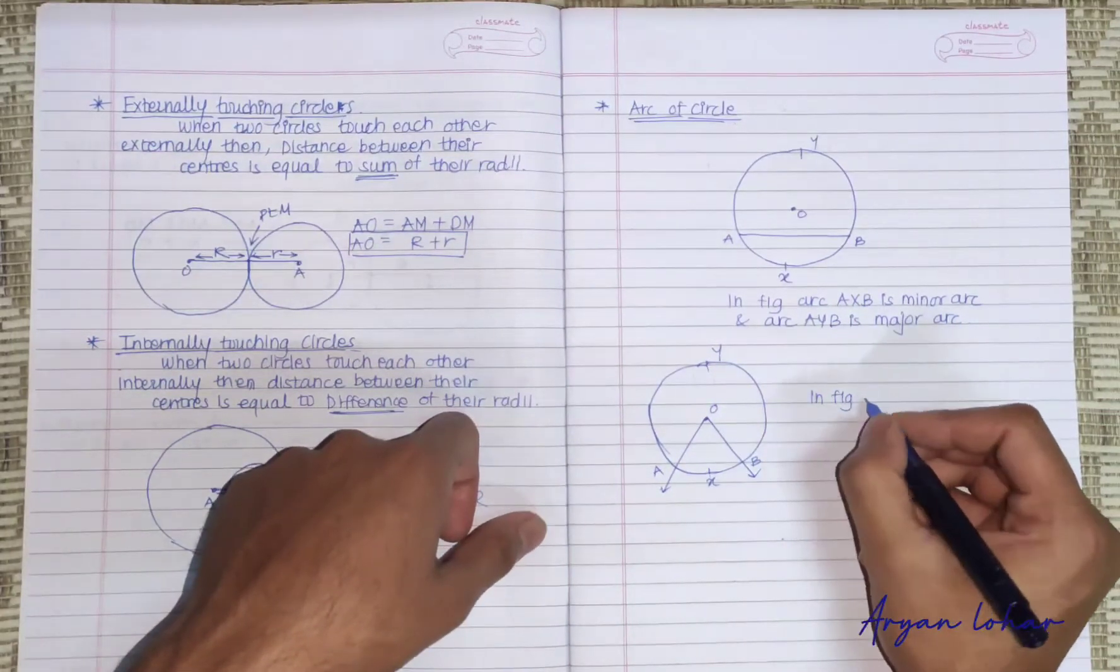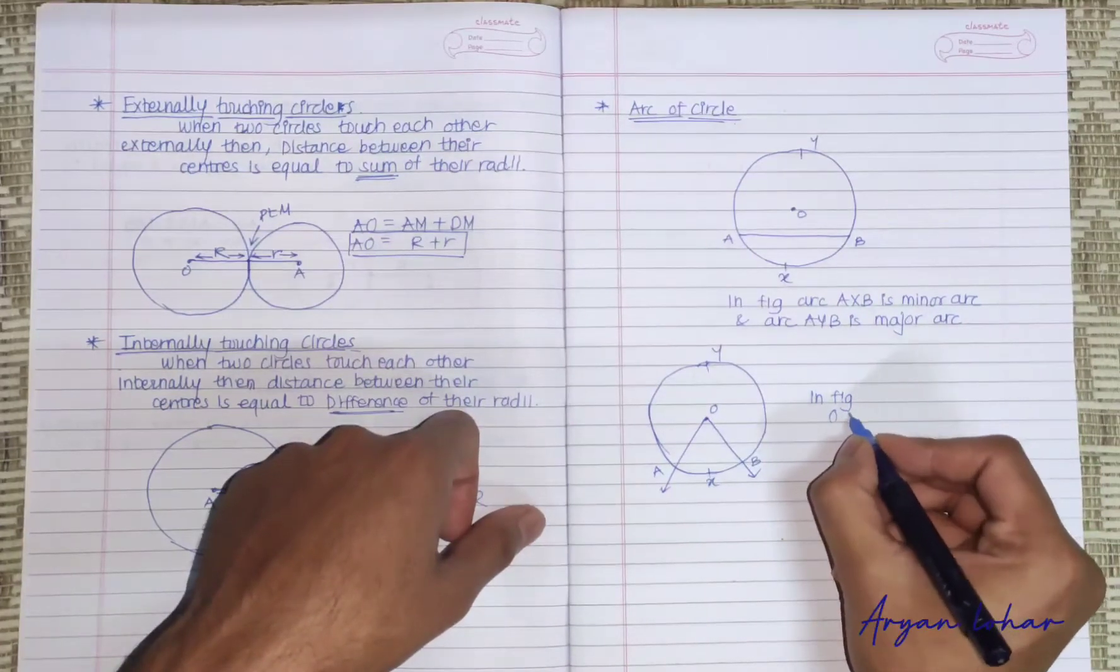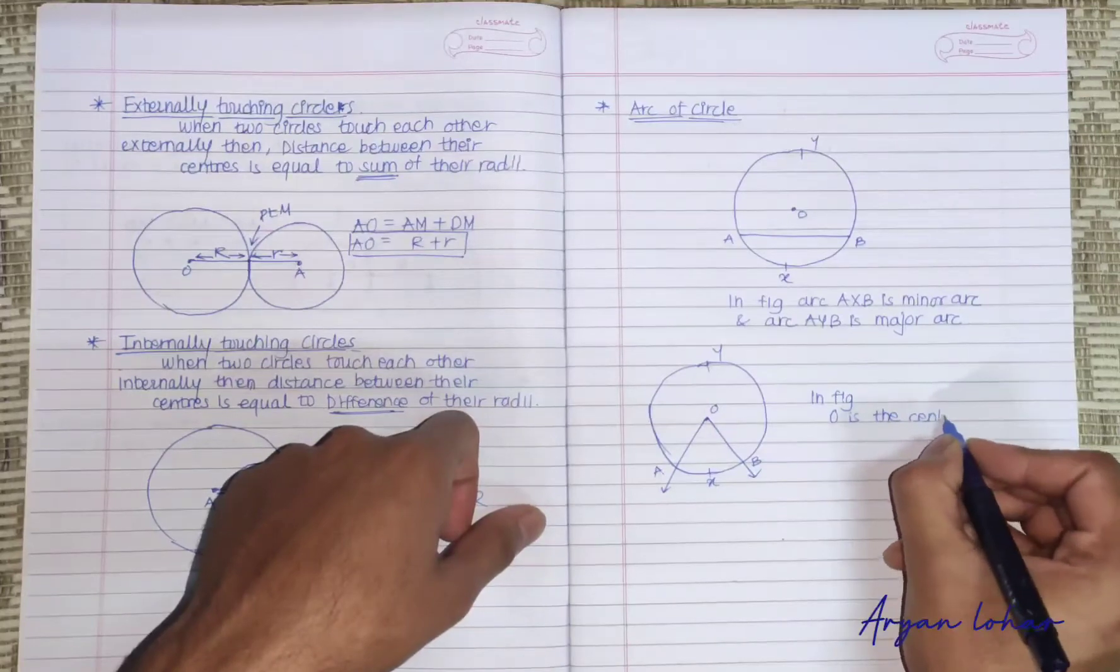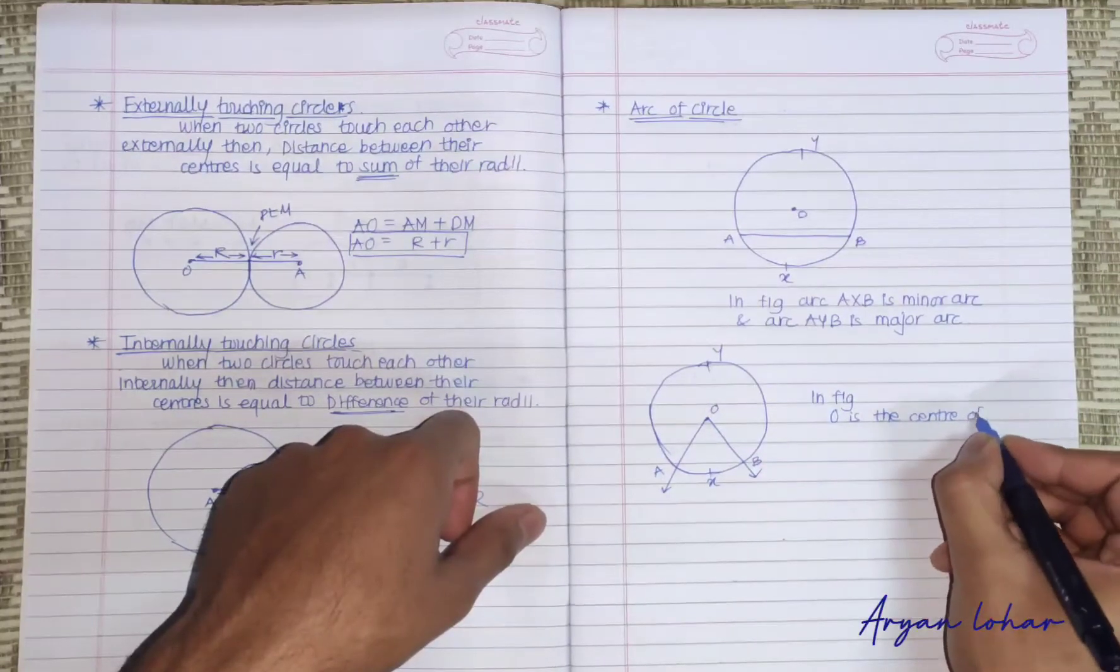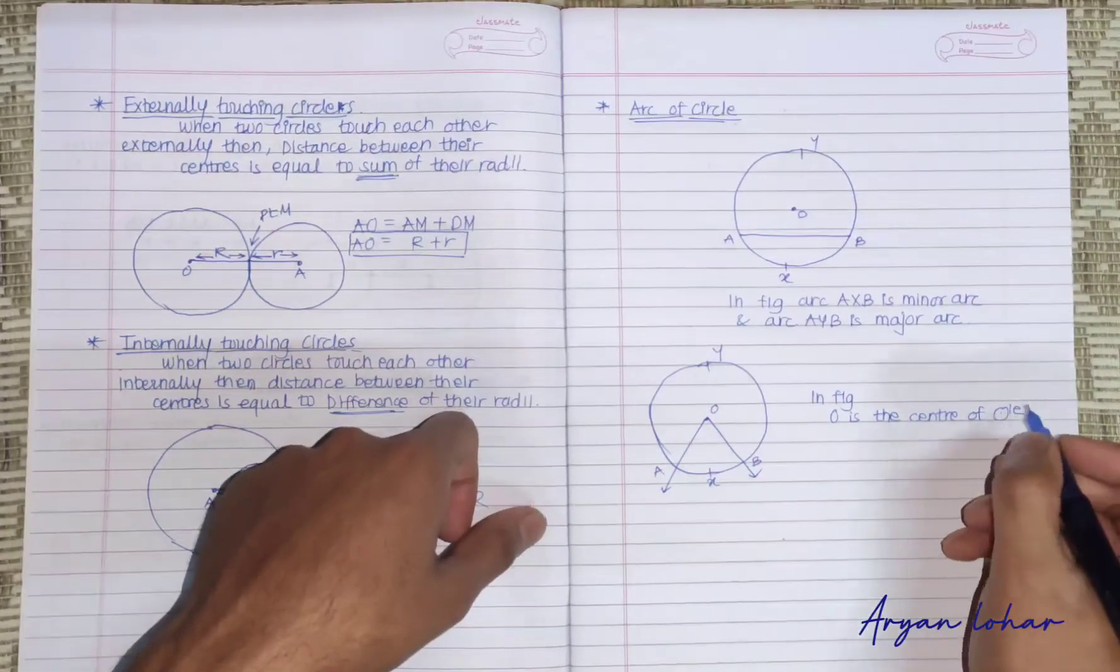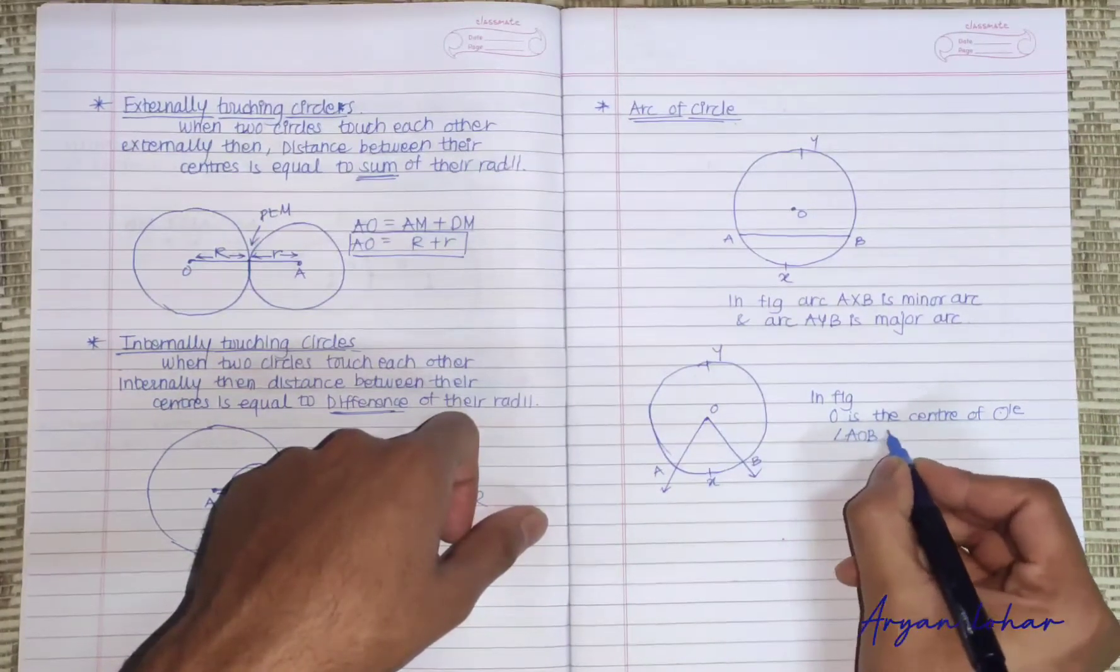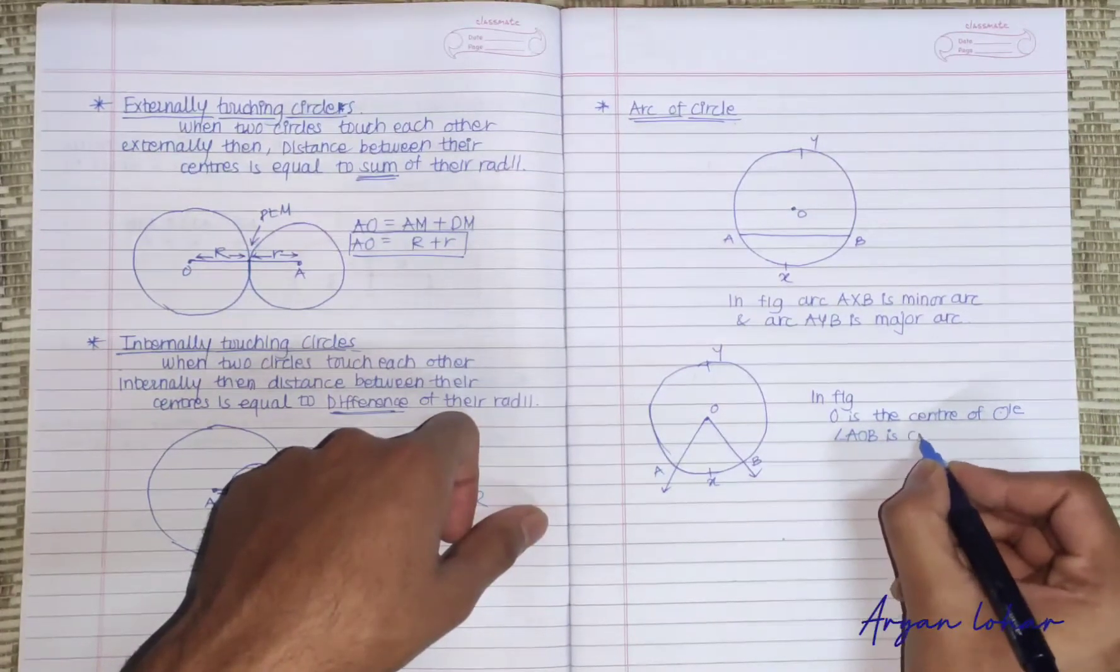So in this figure, O is the center of the circle, angle AOB is central angle.